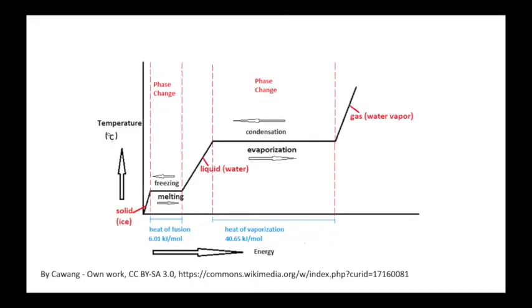The stronger the intermolecular attractions are, the higher the melting point and boiling point are. The strength of the intermolecular forces in a substance is also related to the enthalpy of vaporization and the enthalpy of fusion — the amount of energy you have to put in to overcome the intermolecular forces enough to change phase. Remember those heating curve graphs where you have to put in or remove heat to change phase? We'll look at that more when we study thermodynamics.